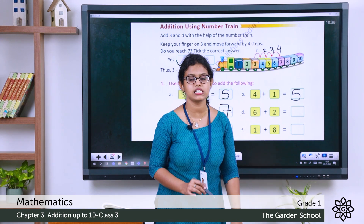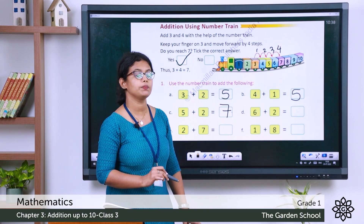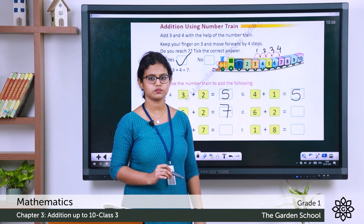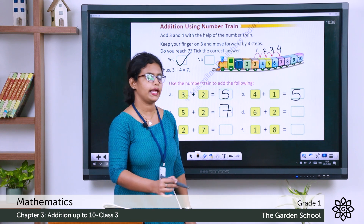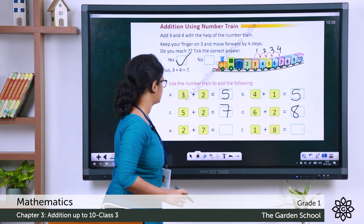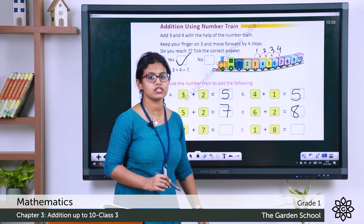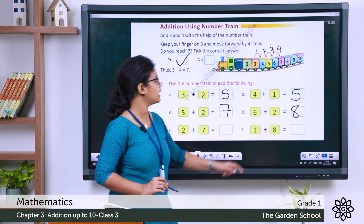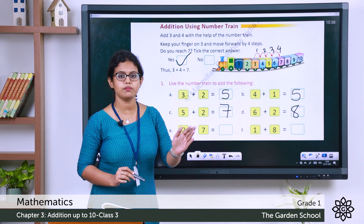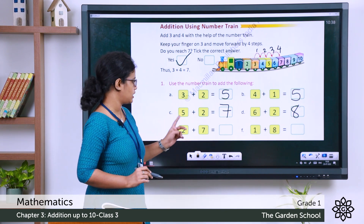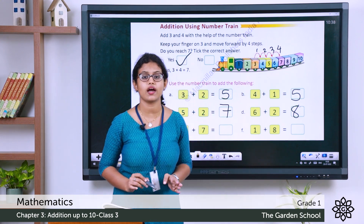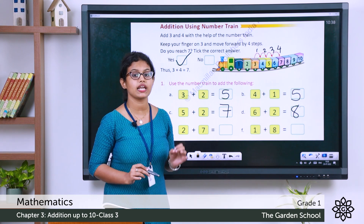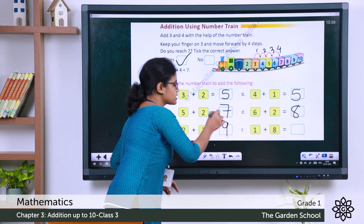Next: 6 plus 2. Keep your finger on number 6, move 2 times. You get the answer 8. Then 2 plus 7: keep your finger on number 2 and move 7 times — 2 to 3, 3 to 4, and so on for 7 steps. You reach number 9. So 2 plus 7 is 9.